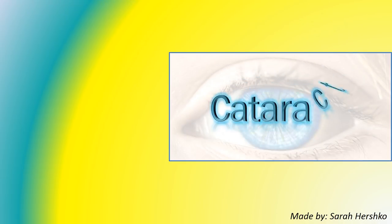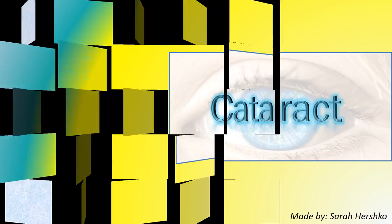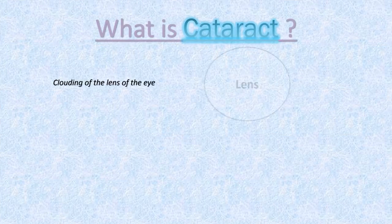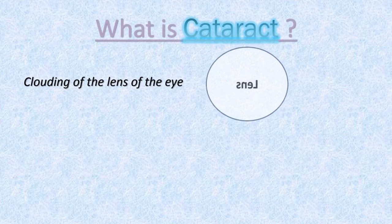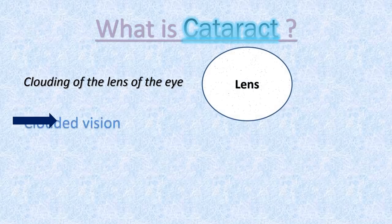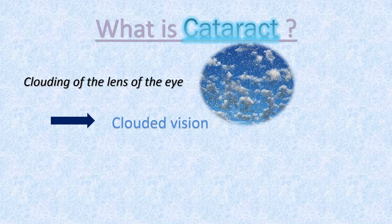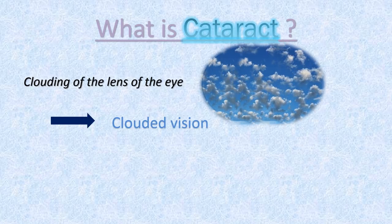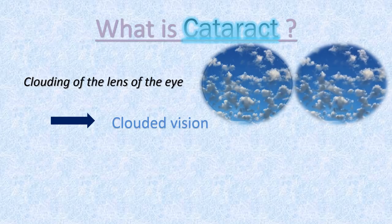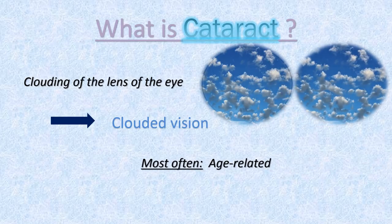Hello and welcome to this educational video about cataract. Let me explain what cataract is. A cataract is basically a clouding of the lens of the eye, which causes clouded vision. It can occur in either one or both eyes, but it cannot spread from one eye to the other.